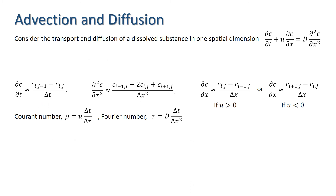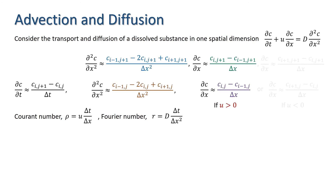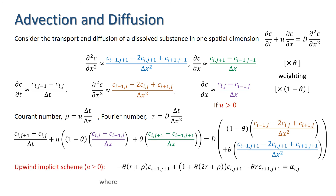For implicit schemes, we also use approximations to the spatial derivatives evaluated at time step j+1. For u > 0, substituting weighted averages of the spatial derivatives across time steps into the advection-diffusion equation gives an upwind implicit scheme. This is a tri-diagonal scheme like the implicit scheme for diffusion, so a tri-diagonal solver is required to implement it.